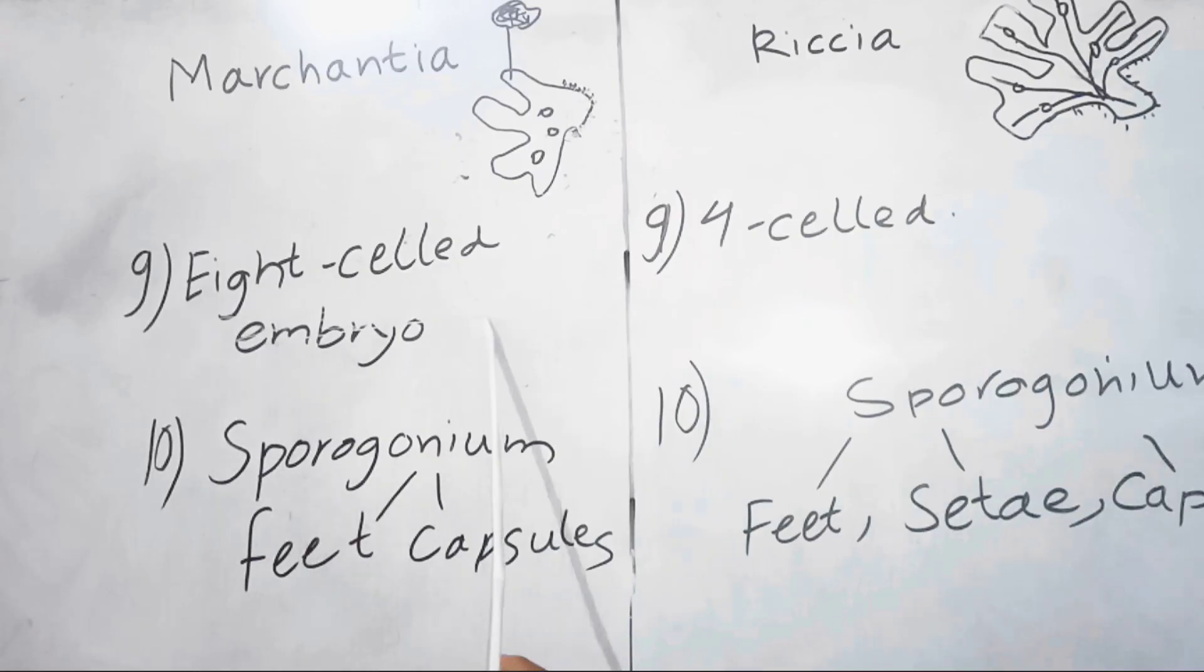In Marchantia, the embryo is 8-celled. In Riccia, the embryo is 4-celled.